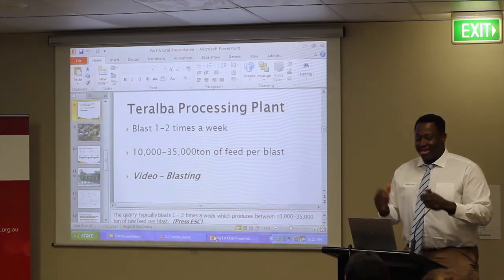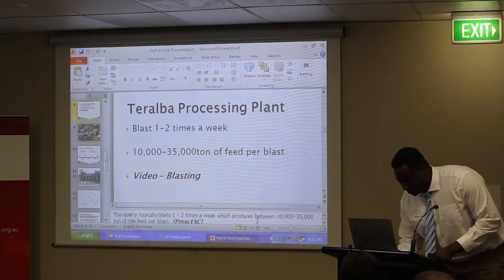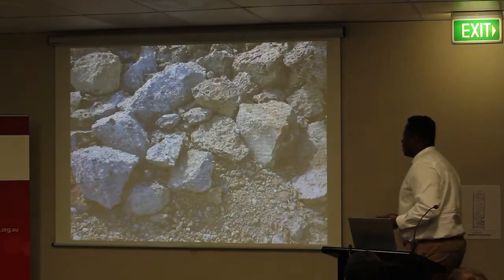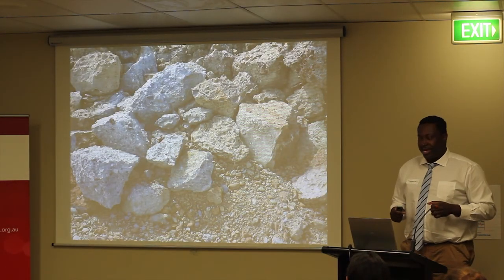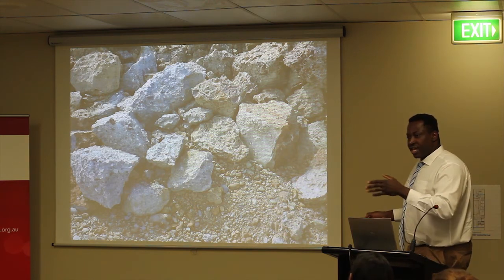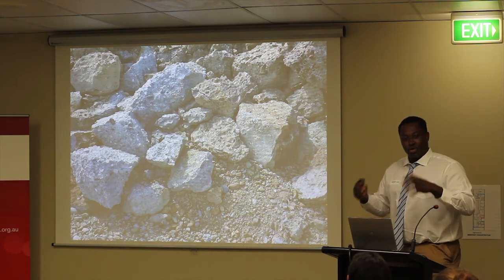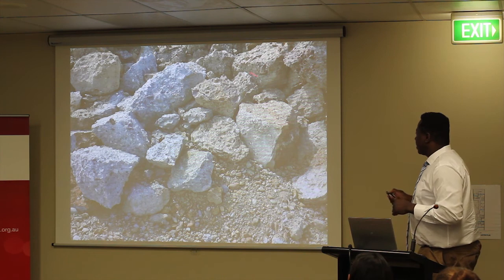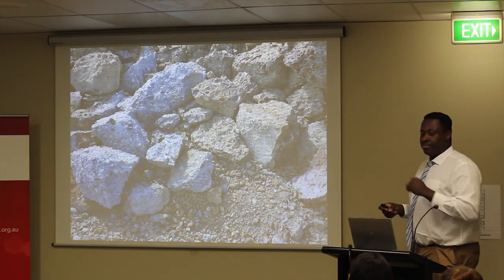In that blast we used 8,000 kilos of explosives — as you can see, they're quite powerful blasts. This is a photo of what the raw feed looks like after we blast. If you look at the left-hand side, you can see the bluish, greyish material — that's the Terralba conglomerate, which will give us a good coloured product, and that's what we want. The brown-coloured material is also conglomerate, but it's a little more weathered.